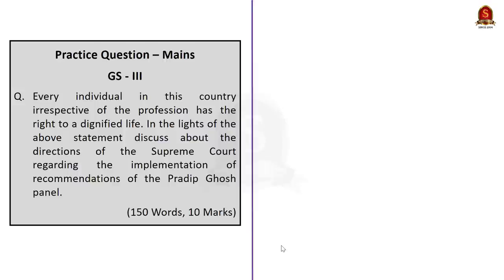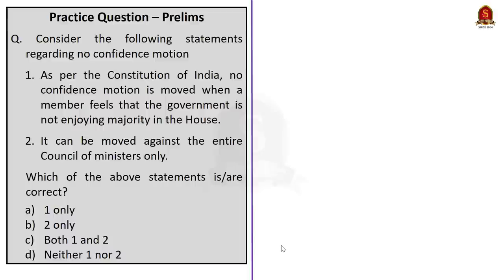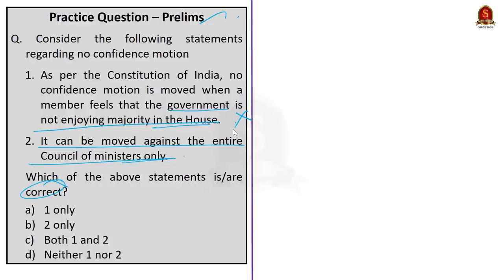Now we move to the preliminary practice questions. Today there are two questions — the first will be solved and the second is a quiz for viewers. The first question is regarding the no-confidence motion. Consider the following statements: Statement 1 — As per the Government of India Act, the no-confidence motion is moved when a member feels the government is not enjoying majority in the house. Statement 2 — It can be moved against the entire council of ministers only. Statement 1 is incorrect because Rule 198 of the Rules of Procedure and Conduct of Lok Sabha specifies the procedure — it is not mentioned in the Constitution.